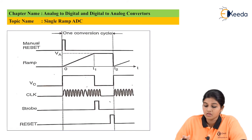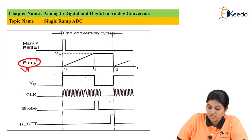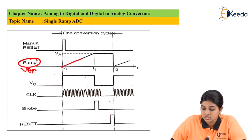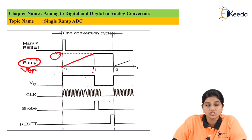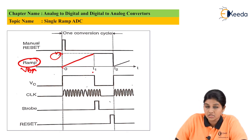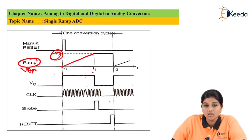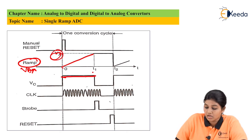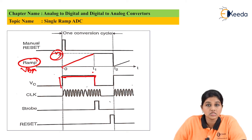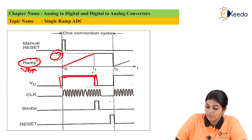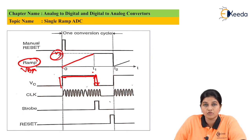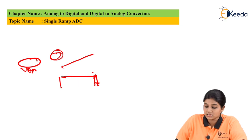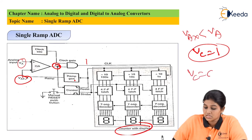The ramp voltage VAX increases until it reaches the value of the unknown voltage VA. At time T equals T1, the ramp voltage equals VA, and this time T1 is directly proportional to the magnitude of VA. During this time, the comparator output remains high. At T equals T1, when VAX tries to increase beyond VA, the comparator output goes low — VC becomes zero — and this disables the clock signal.